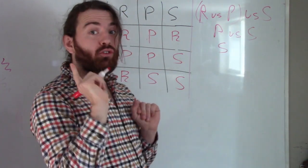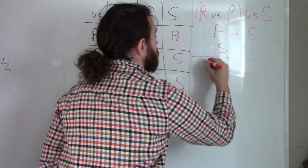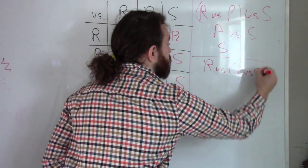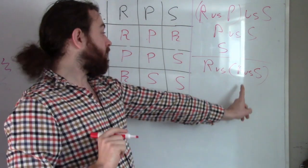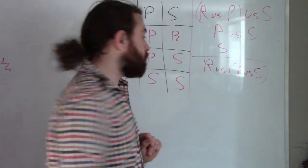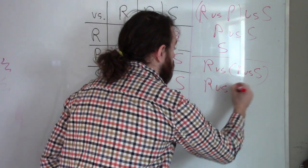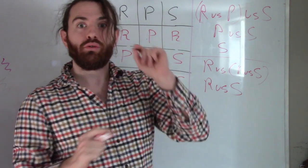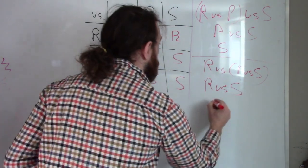Now if I was to switch the order though, look what happens. If I do rock versus paper versus scissors, then this tells me I have to do paper versus scissors first. So scissors cuts paper and I'm left with rock versus scissors. And then rock versus scissors, well, rock beats scissors. So I'm left with rock.